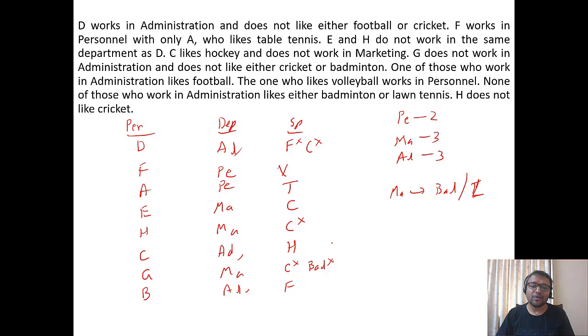Three Marketing people - G doesn't like badminton, so H likes badminton and G likes lawn tennis. In the Administration department, one has football, one has hockey, so D has the last sport left, which is basketball. From that we get the complete table.